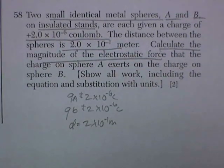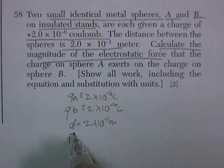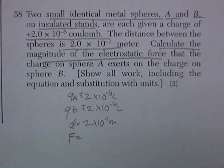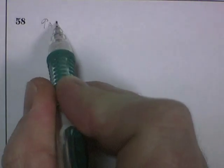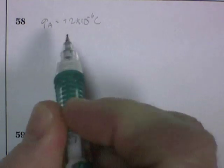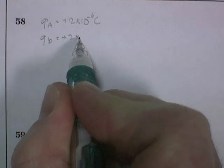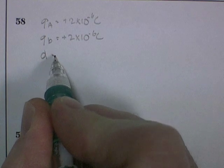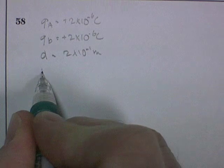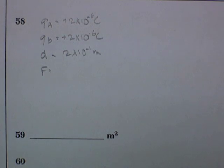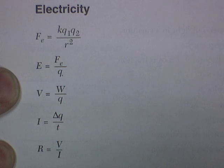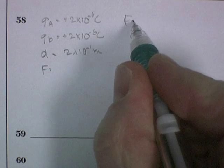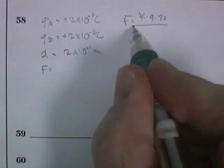Calculate the magnitude of the electrostatic force. So we want to calculate the force between those two charges. Show all work, including equations, substitution with units. So the first thing that we do is we transfer our information onto our answer sheet. Charge A is positive 2 times 10 to the negative 6 coulombs. Charge B is also positive 2 times 10 to the negative 6 coulombs. The distance separating them is 2 times 10 to the negative 1 meters. And we're looking for the force of repulsion in this case. But they're not asking if it's attractive or repulsive. They just want to know the magnitude. The very first formula in the electricity section gives us our solution. Force is KQQ divided by R squared. So force is equal to K times Q1 times Q2 divided by R squared.